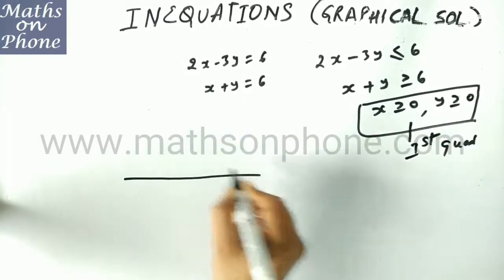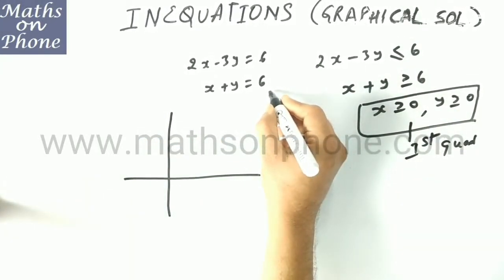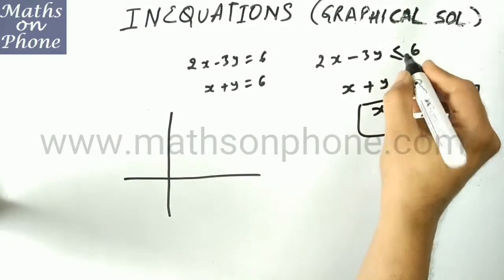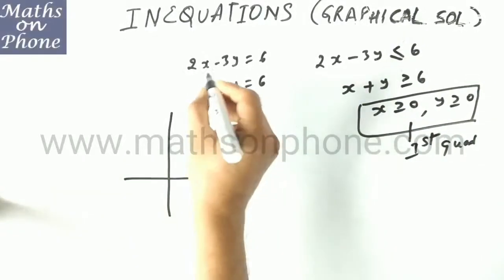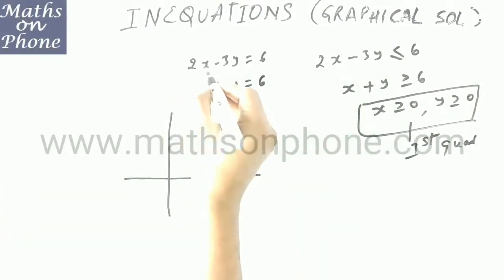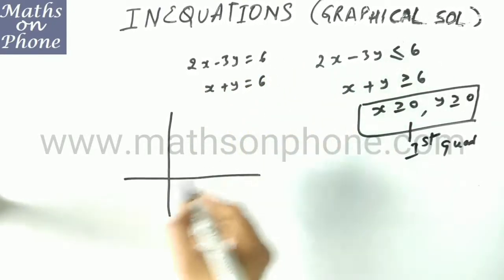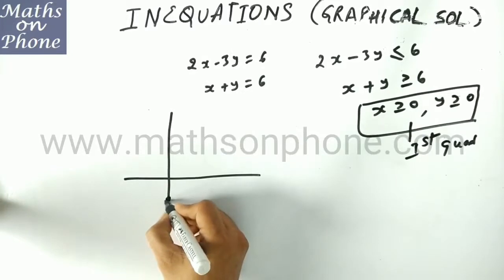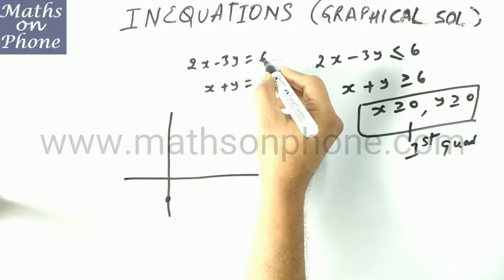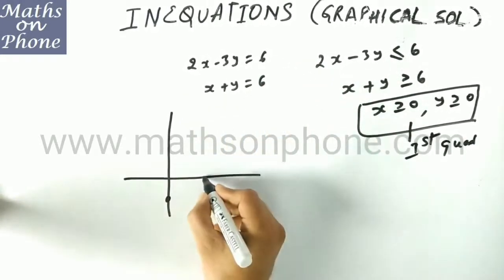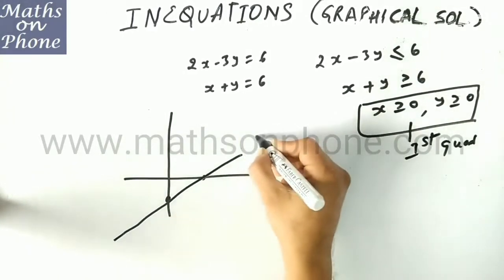Now firstly we need to draw the graph of the two lines. Will they be dotted or solid lines? Here the equal to sign is present, so we have to go for solid lines. For the first line: put x equal to 0, y comes out to be minus 2 — mark it here. Put y equal to 0, x comes out to be 3 — mark 3 here. Now draw the line. This is line number 1.